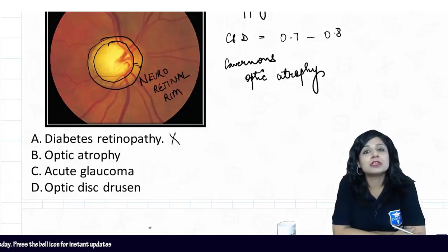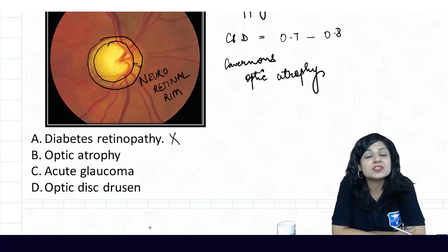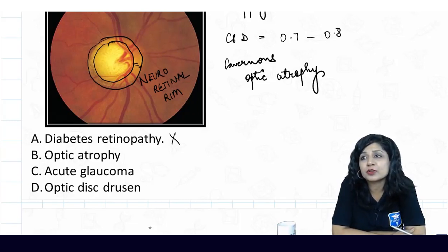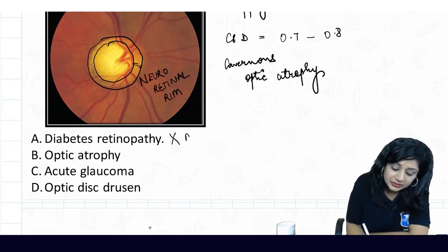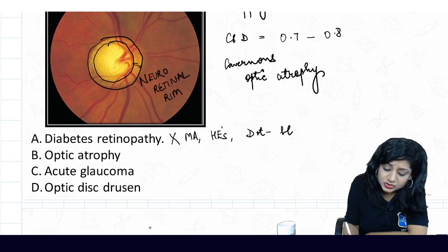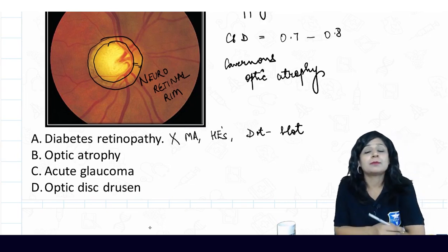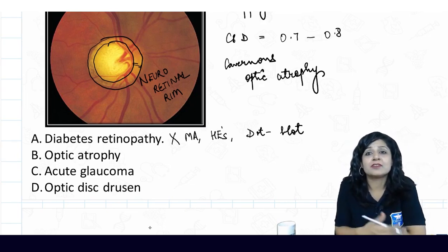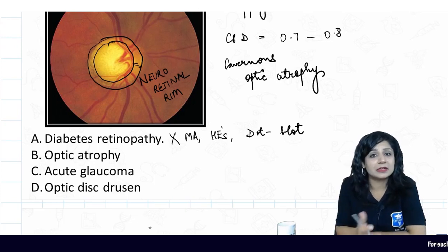It is not the changes found in diabetic retinopathy. What changes do you get in diabetic retinopathy? Microaneurysms, hard exudates, dots and blots hemorrhages, intraretinal microvascular changes, venous changes like looping and beading - but not this.